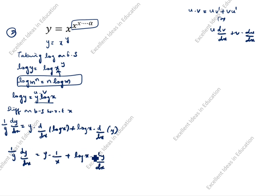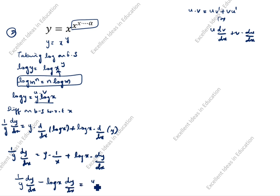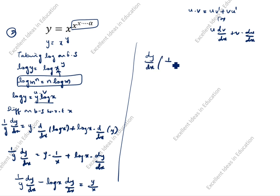dy/dx appears on both sides, so we bring it to one side. (1/y)·dy/dx minus log(x)·dy/dx equals y/x. Taking dy/dx as a common factor: dy/dx·(1/y − log x) = y/x.